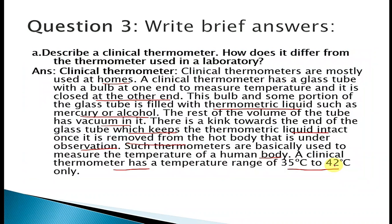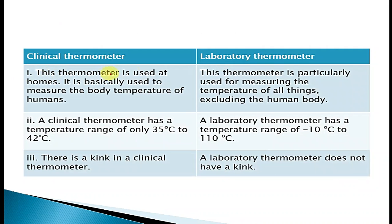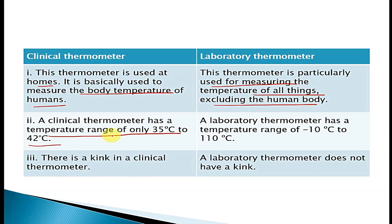Differences between clinical and laboratory thermometers: A clinical thermometer is used at homes to measure human body temperature, while a laboratory thermometer measures temperature of all things excluding the human body. A clinical thermometer has a range of 35°C to 42°C, while a laboratory thermometer has a range of -10°C to 110°C. A clinical thermometer has a kink; a laboratory thermometer does not have a kink.